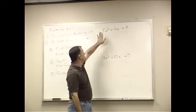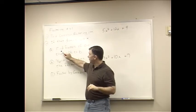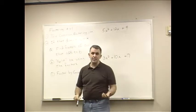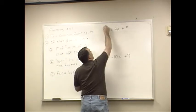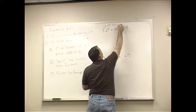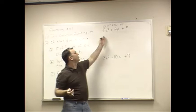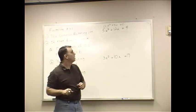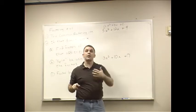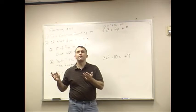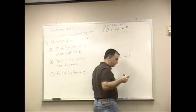My first example is 5X to the second plus 12X plus 4. So step 1 says find factors of AC that add to B. Well, A's value, don't forget, you've got AX squared plus BX plus C. The value of A is 5, and the value of C is 4. So we want to do AC. Well, AC, 5 times 4 is 20. So we want factors of 20 that add up to B, 12.